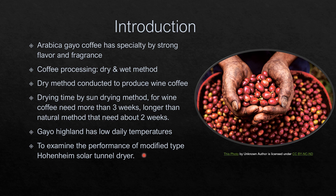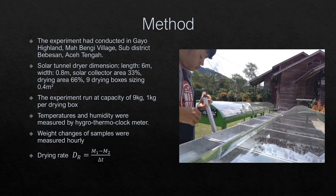So the objective of our study is to examine the performance of the modified Hohenheim Aceh solar tunnel dryer. We conducted the experiment in Mahbengi village, sub-district of Bebesan, district of Aceh Tengah, province of Aceh.